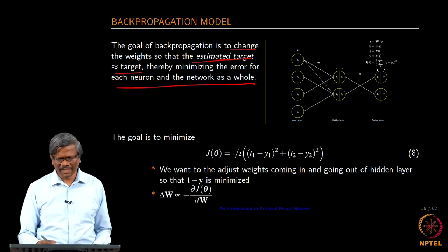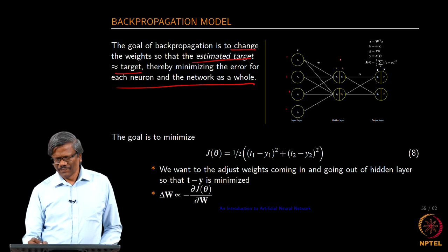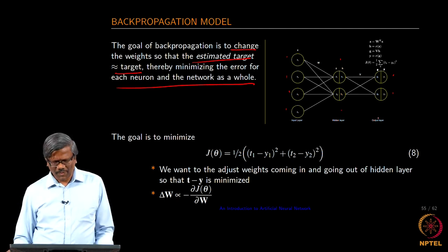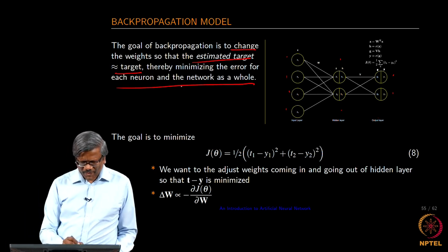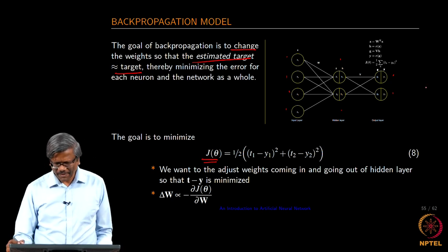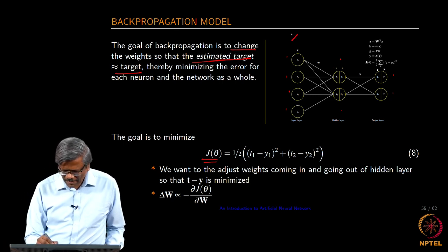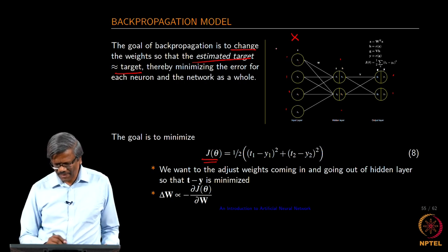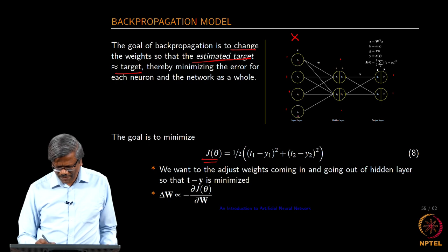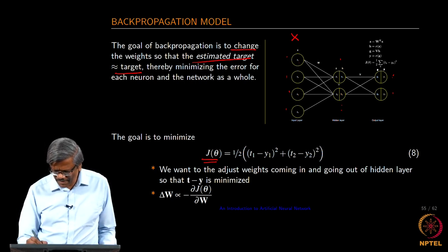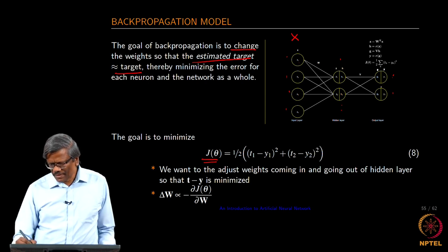This is very similar to what we saw in the XOR model, but we are extending it a little more. The size would dictate the complexity of the network. This is a simple network with 4 input units, 2 hidden units, and 2 output units. Here we want to minimize the error using the cost function. I have divided the hidden units into 2 and the output units into 2 parts.